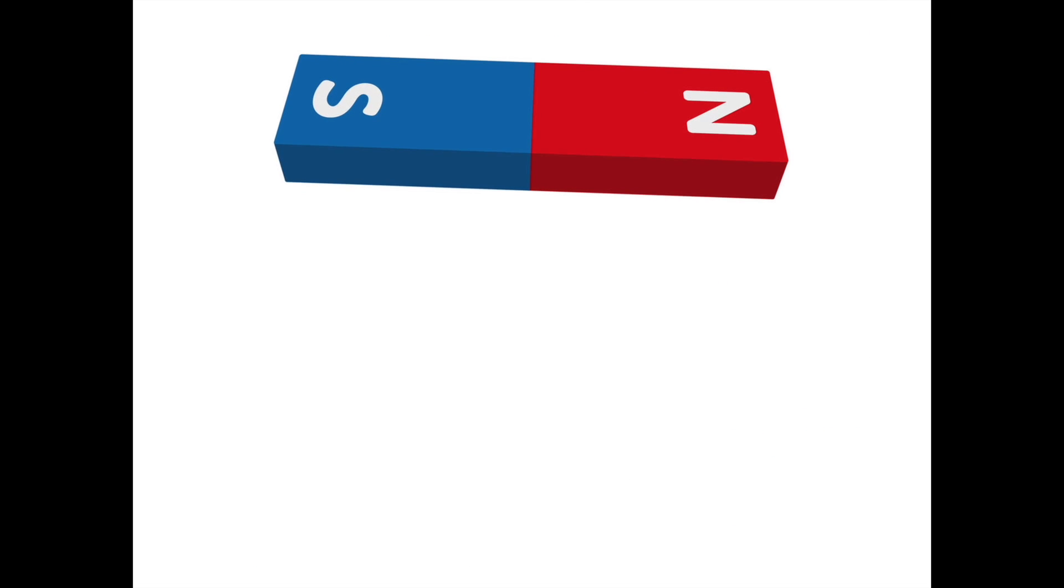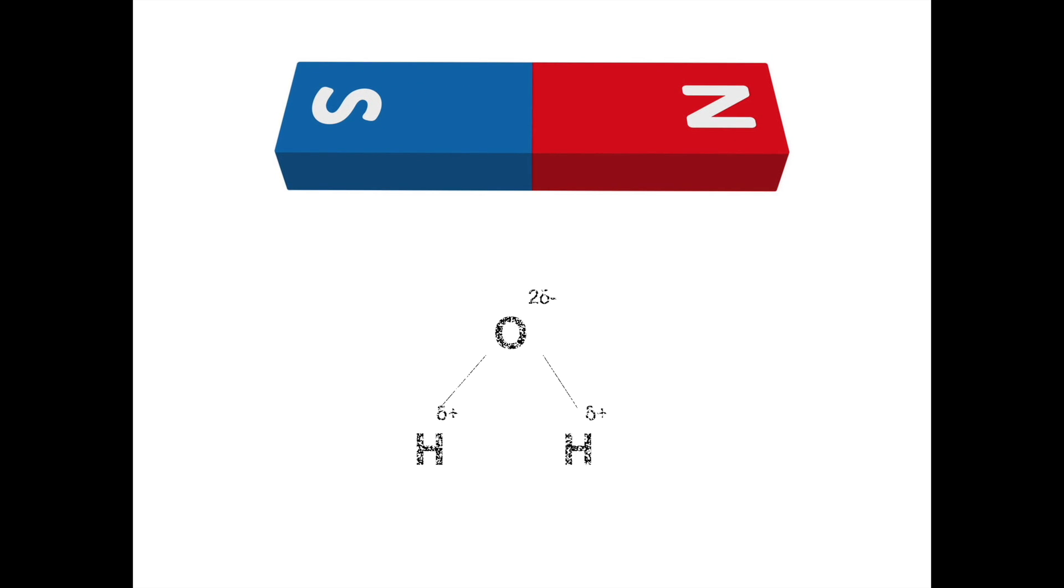We essentially have a molecule that is just like a magnetic bar, with two poles, the north pole and the south pole. But in the case of a water molecule, you have the partial negative oxygen and the partial positive hydrogen.